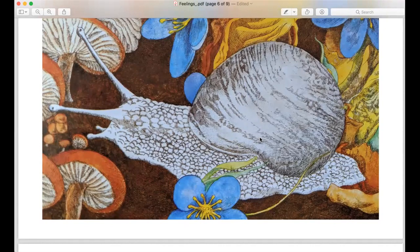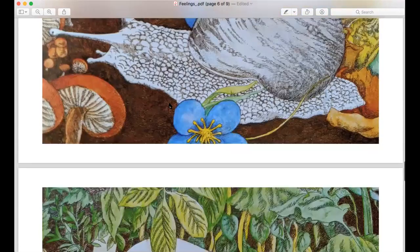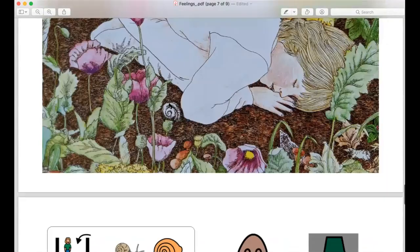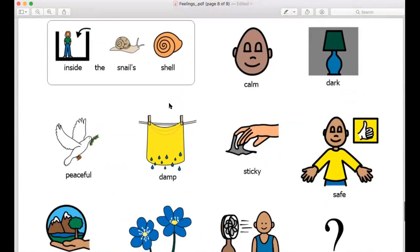And inside of that shell we thought it was dark and cool like the garden. Maybe it was blue and green and brown.